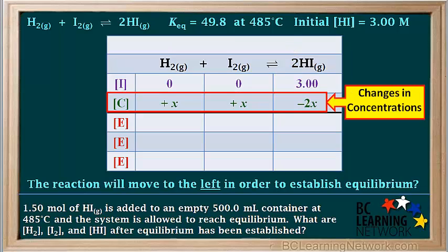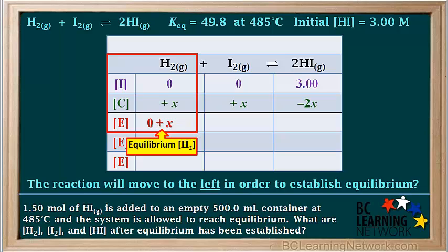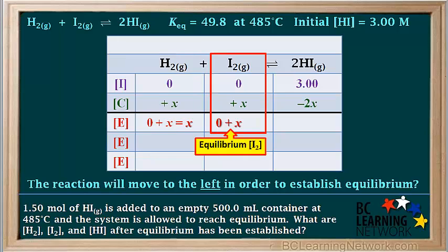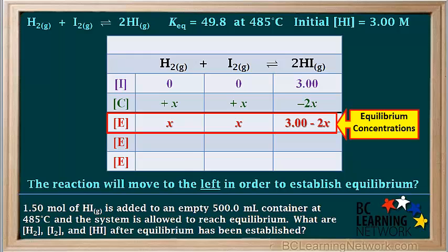We have now determined the changes in concentration of all three species. The reaction moves to the left: H2 and I2 each increase by X, and HI decreases by 2X. The equilibrium concentration equals the initial concentration plus the change. So the equilibrium concentration of H2 is 0 plus X = X, I2 is also 0 plus X = X, and HI is 3 minus 2X.